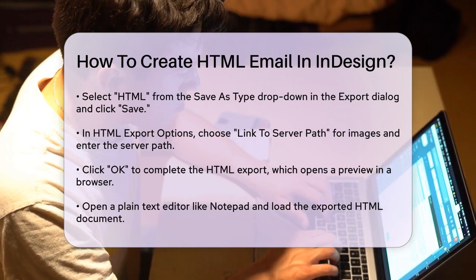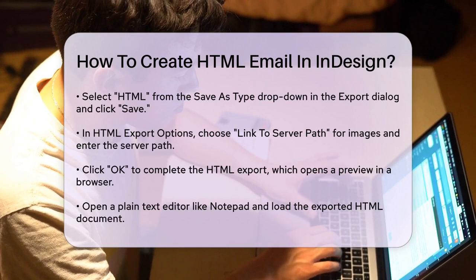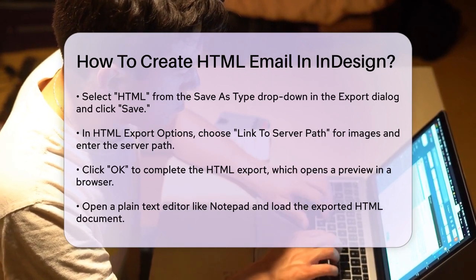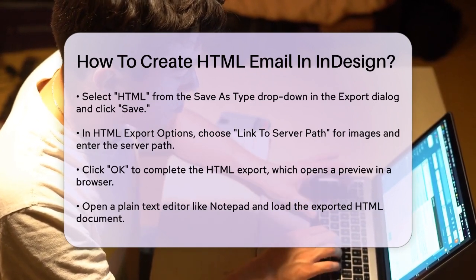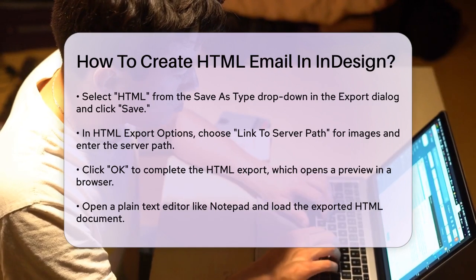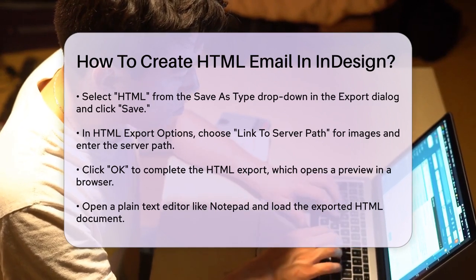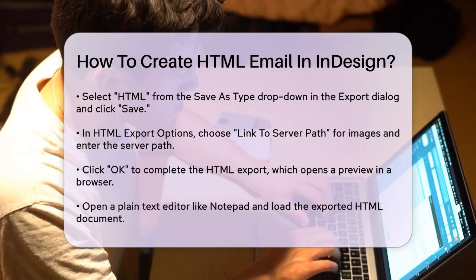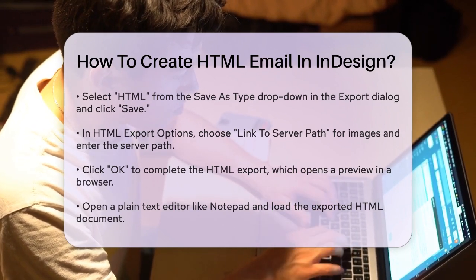A preview of your document will open in a new browser window. Open a plain text editor, like Notepad. Go to File, then Open, and select the HTML document you just exported. Press Ctrl-A to select all the HTML code, and then press Ctrl-C to copy it to your clipboard. You can now paste this HTML code into the message body of a new email.